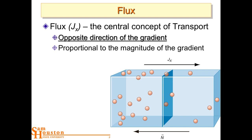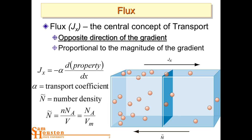This whole section of the notes studies what those alphas are — the transport coefficients. There's a different one for diffusion, one for thermal conductivity, one for ionic conductivity, one for all the different gradients we calculate. There's a different transport coefficient for each type, and we'll see that they explain a lot of the things we deal with on a normal basis.